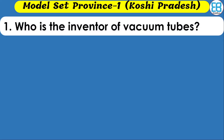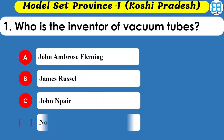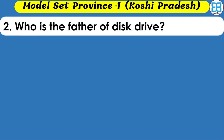Who is the inventor of vacuum tubes? The options are John Ambrose Fleming, James Russell, and none of the above. The correct option is John Ambrose Fleming.